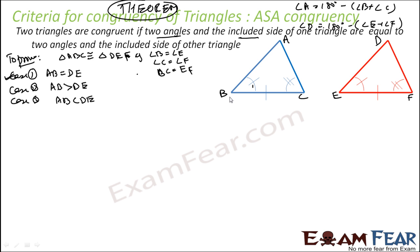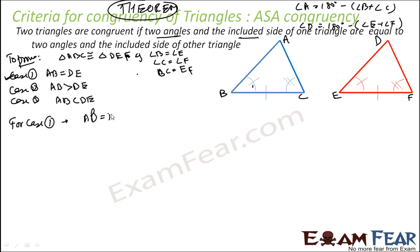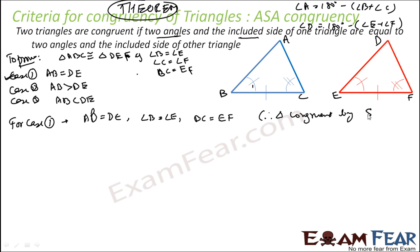In case 1, if AB is equal to DE — that is given — and BC is equal to EF — that is given — and angle B is equal to angle E — that is given — then by the side-angle-side axiom, triangle ABC is congruent to triangle DEF. So case 1 is pretty easy to prove.